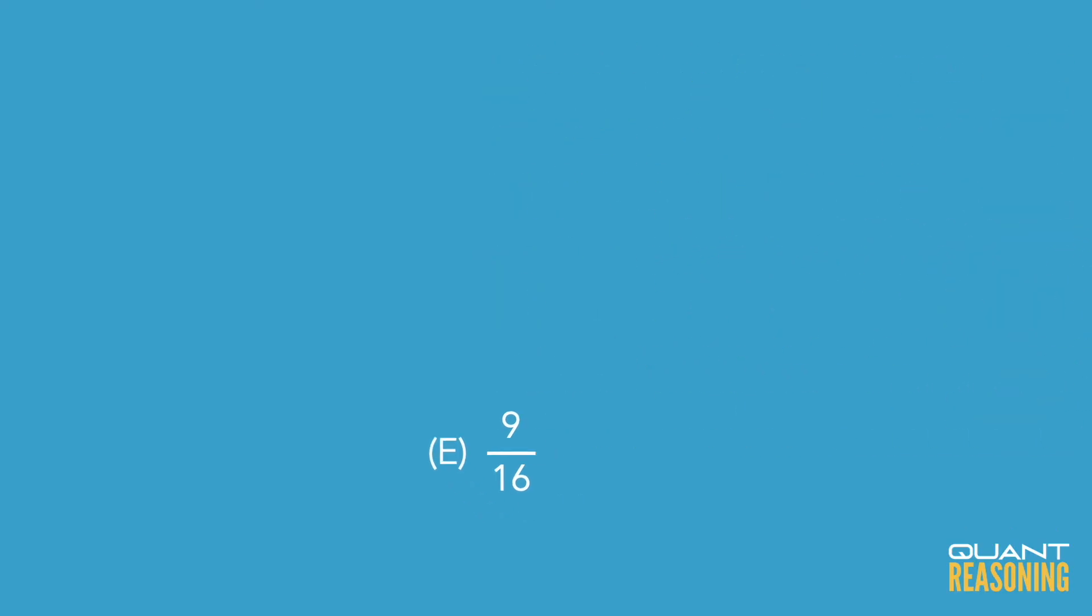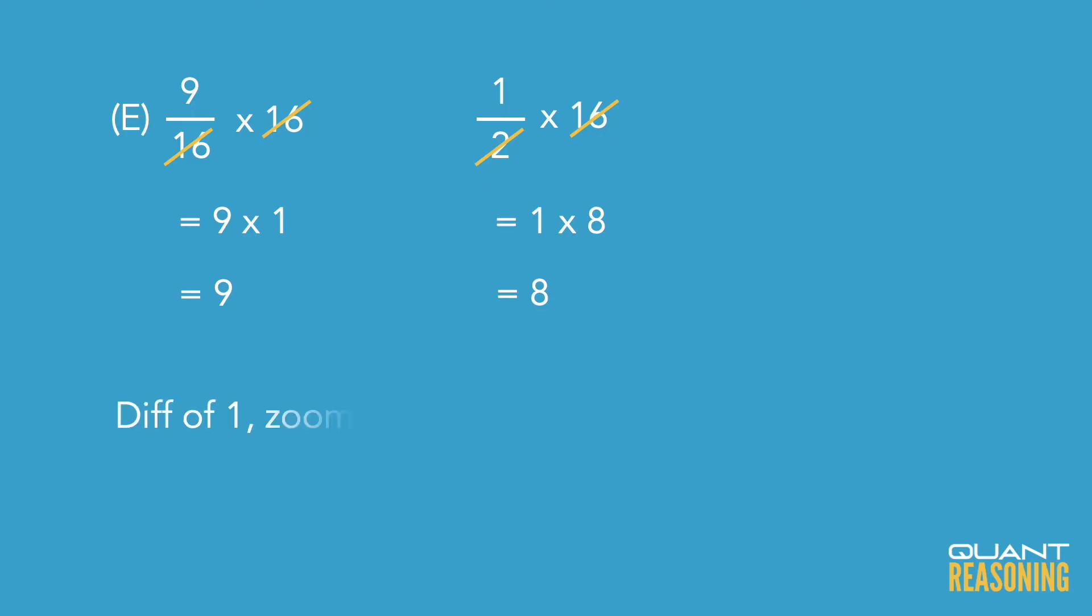Moving on to the last answer choice, we're comparing half to nine over 16. So let's zoom in by a factor of 16. Half of 16 is eight. Nine over 16 out of 16 is nine. So we have a gap there of one, zooming back out by a factor of 16. One over 16.